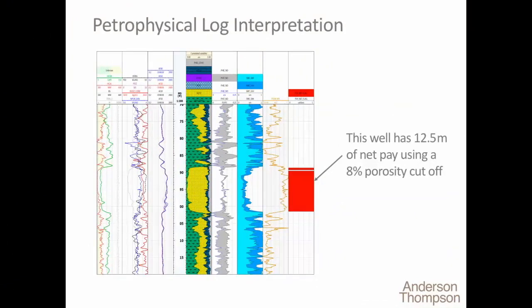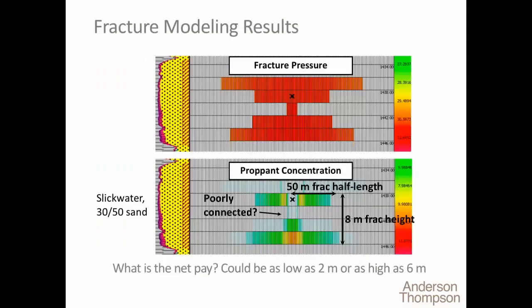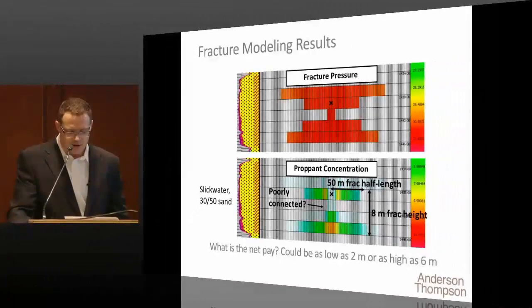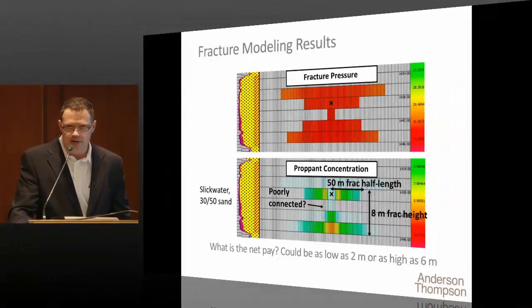The frack modeling results were showing — in this case it was a slick water 30-50 sand — that the slick water wasn't able to carry the proppant up very well. The sand dropped, and not only did it drop, but the fracture results showed a very poor connection. After more than a couple meters down, there's a gap, as you can see in the illustration in the bottom image. Then the conductivity, or the sand concentration, kind of gets high again.